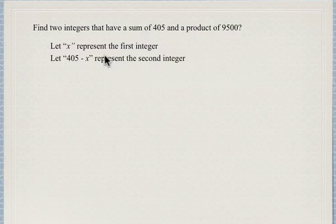And the reason for that is, let's say our first integer is 1. Well, then our other integer is going to be 405 minus 1, which is 404, because then they have a sum of 405. Or another example would be if x is 2, then 405 minus 2 is 403, and then the sum of 2 and 403 is 405. So now you know where this 405 minus x is coming from.